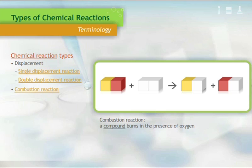The yellow and red block is our organic substance, and the white block is oxygen. The products are carbon dioxide, shown as the yellow and white block, and water, which is the red and white block.